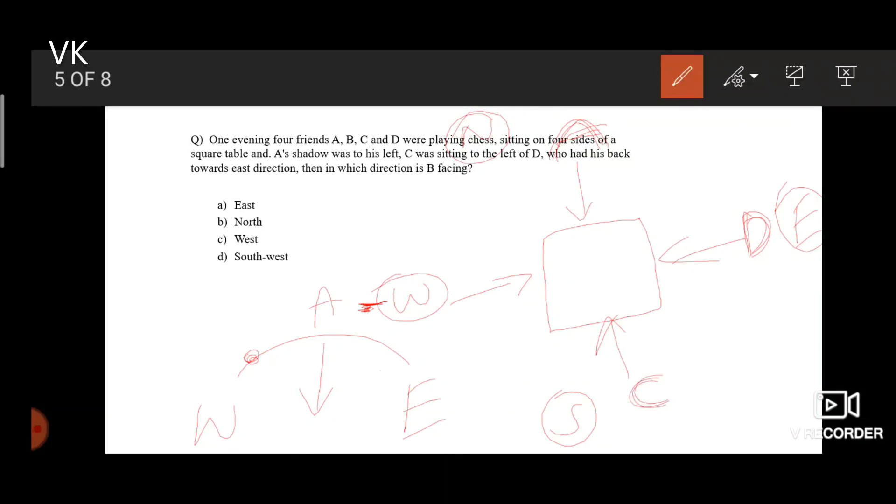C is to the left of D. Then in which direction B is facing? Obviously, B is facing towards east. Hence option A is the final answer.